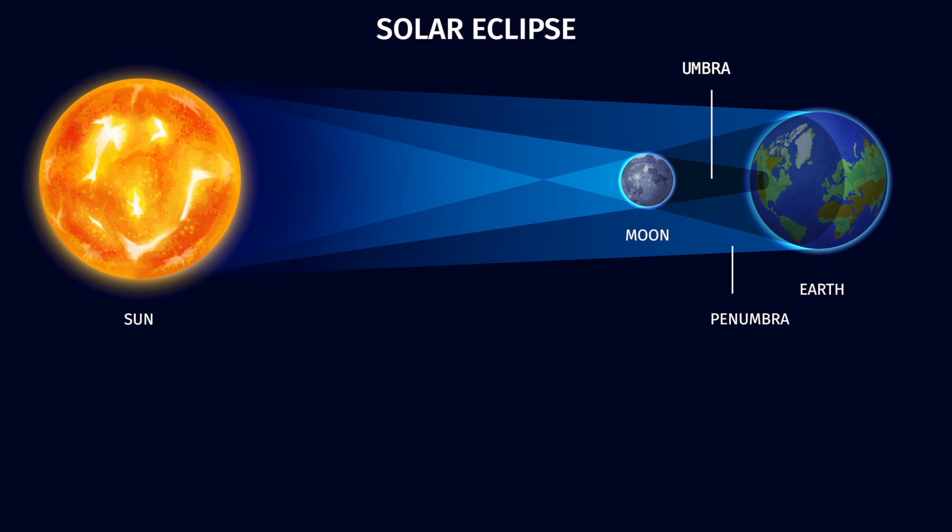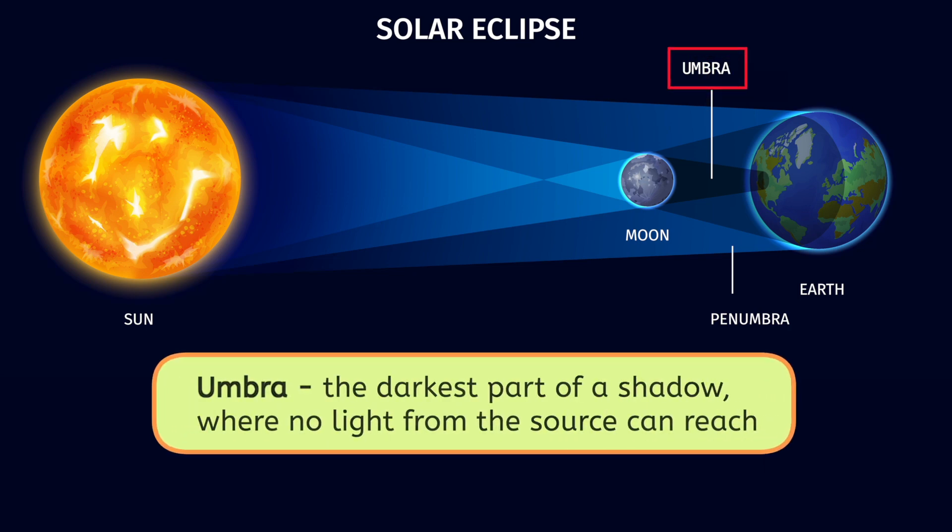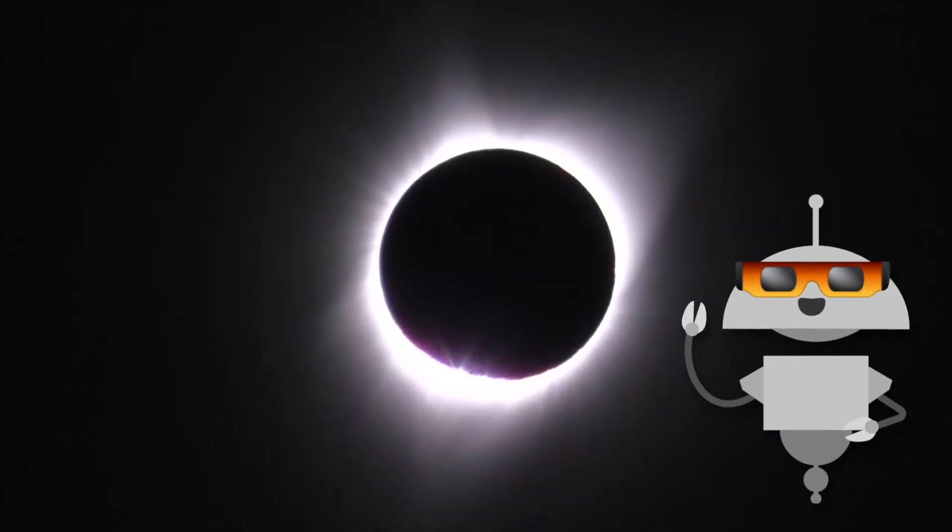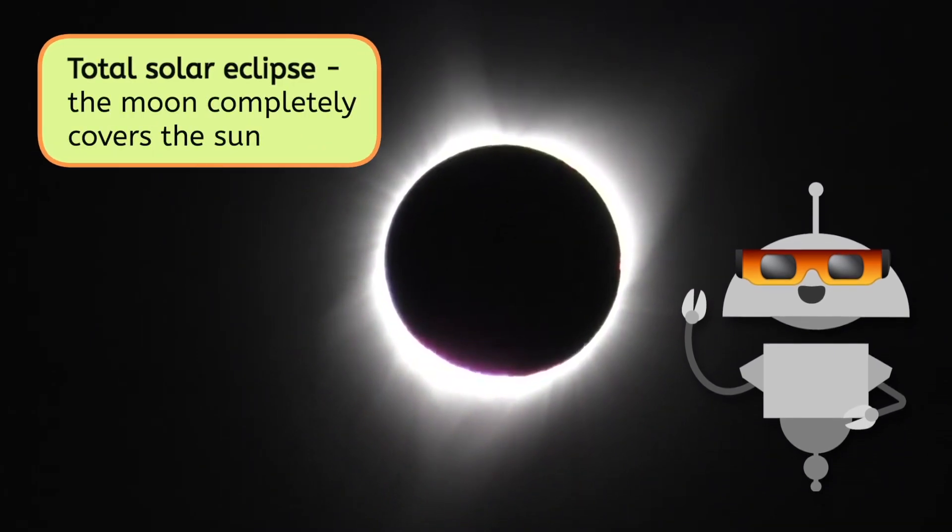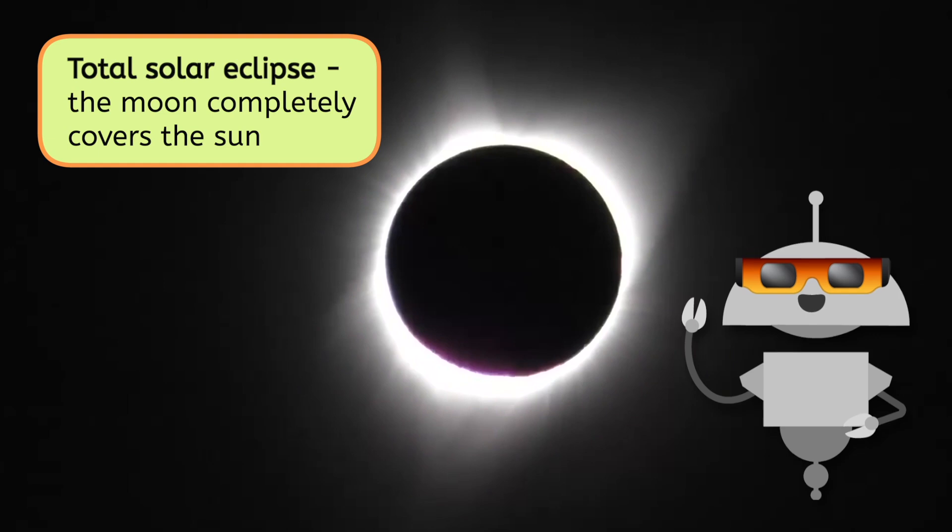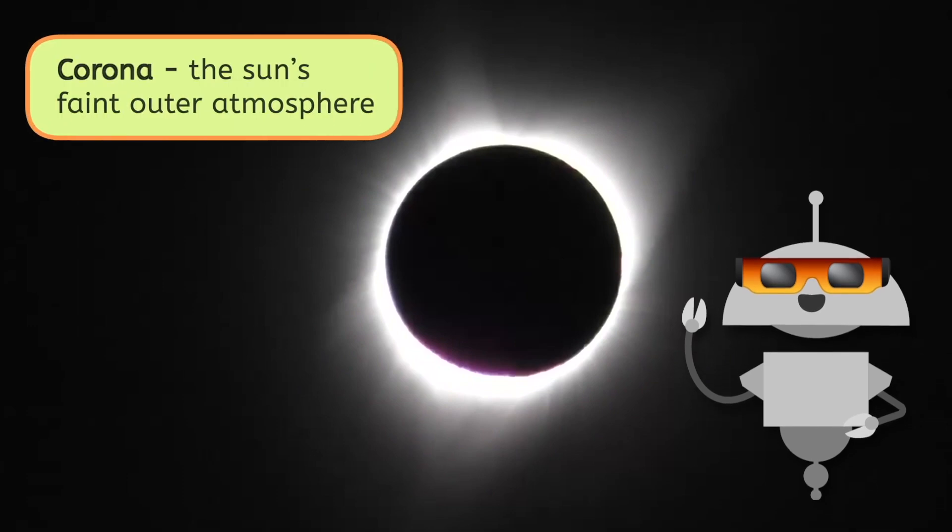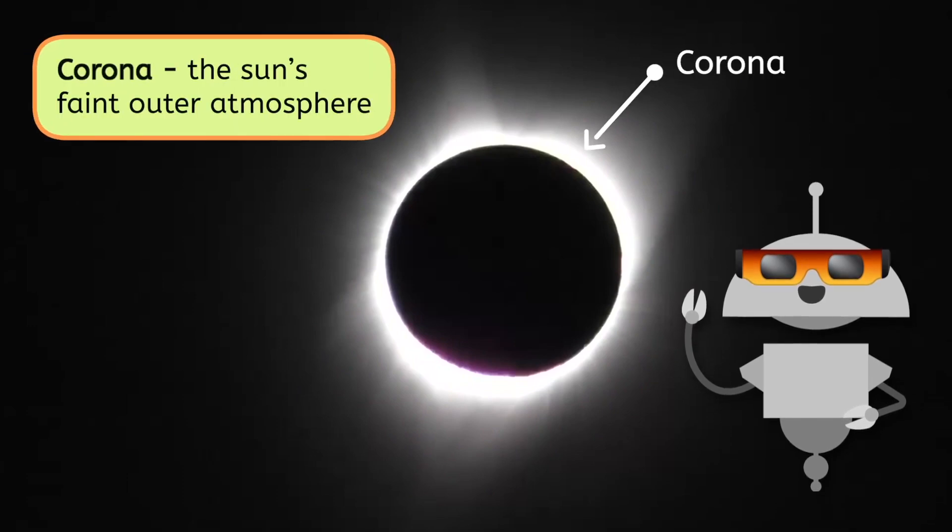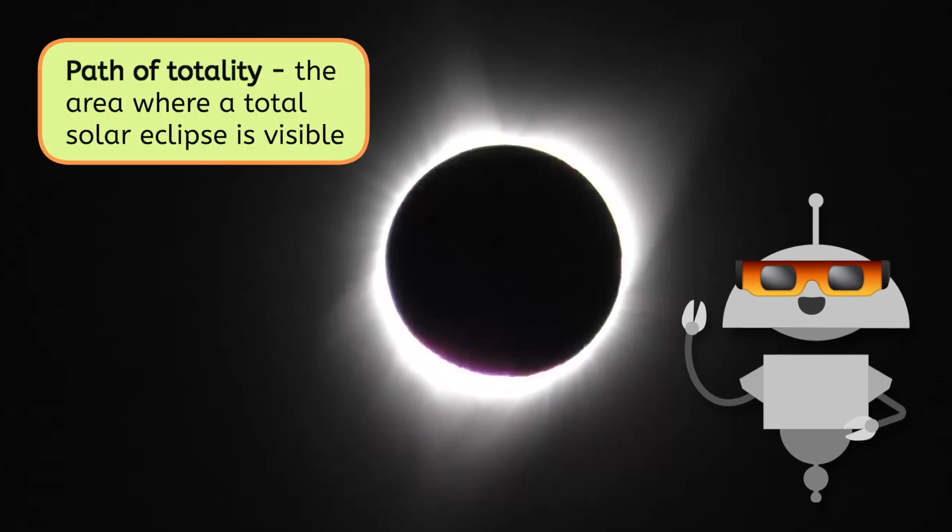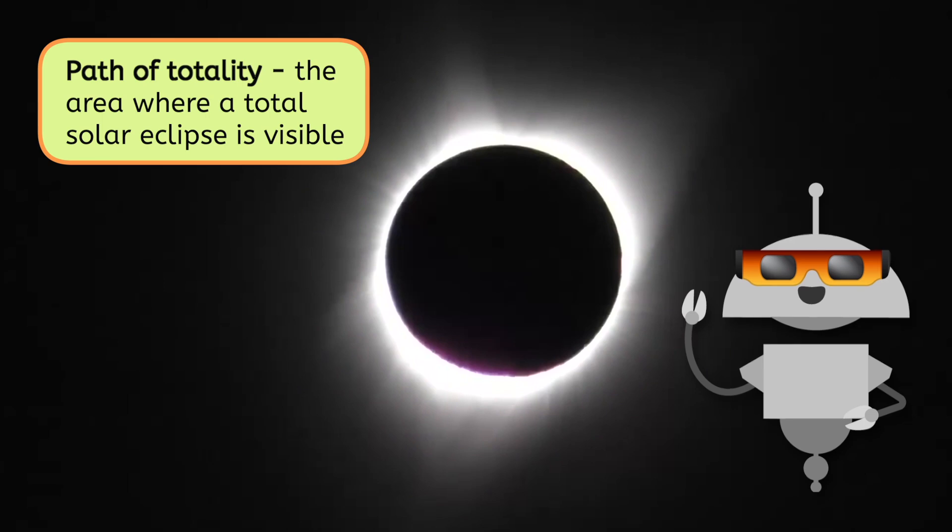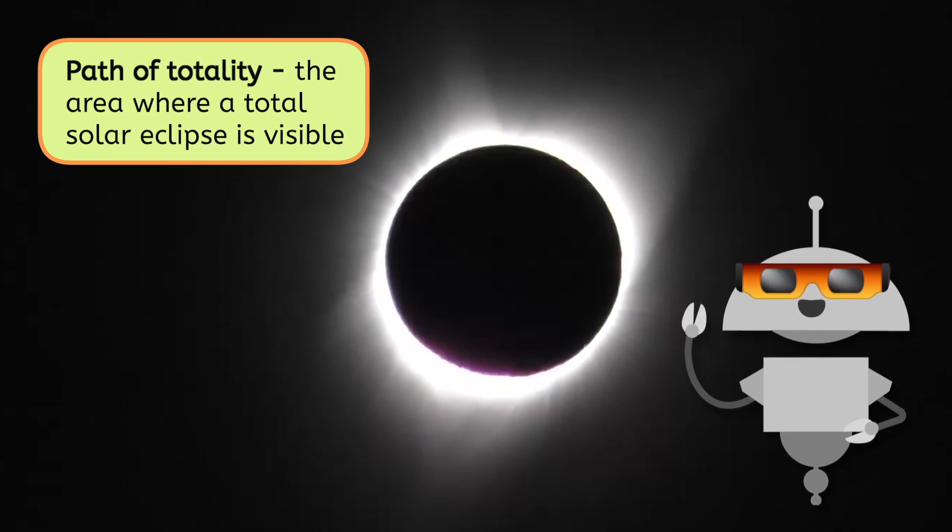When the moon casts its shadow on Earth during a solar eclipse, the shadow has two important parts. The first part is the umbra. The umbra is the darkest part of a shadow where no light from the source, in this case the Sun, can reach. All the Sun's light is blocked by the moon. If you're standing in the umbra during a solar eclipse, you'll witness a total solar eclipse, with the moon completely covering the Sun and its umbra turning day into night for a few minutes. During a total solar eclipse, observers in the umbra can see the Sun's corona, its faint outer atmosphere that's usually hidden by the Sun's brightness. The area where a total eclipse is visible is called the path of totality, but this area is very small, often only 50 miles wide.